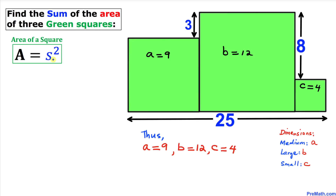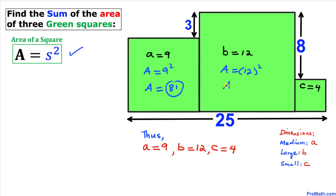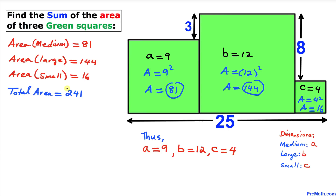For the final step, let's recall the area of a square formula: Area equals s squared, where s represents the side length. For the medium square, the area is 9 squared, which equals 81 square units. For the large square, the area is 12 squared, which equals 144 square units. For the small square, the area is 4 squared, which equals 16 square units.